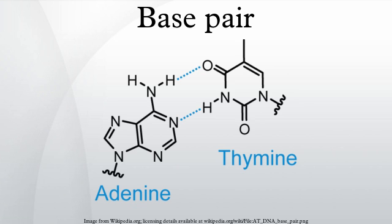Their results show that for PCR and PCR-based applications, the d5SICS–dNaM unnatural base pair is functionally equivalent to a natural base pair, and when combined with the other two natural base pairs used by all organisms — T-A and G-C — they provide a fully functional and expanded six-letter genetic alphabet. In 2014, the same team from the Scripps Research Institute synthesized a circular DNA plasmid containing natural T-A and C-G base pairs along with their best-performing unnatural base pair, and inserted it into E. coli cells that successfully replicated the unnatural base pairs through multiple generations. The transfection did not hamper the growth of the E. coli cells and showed no sign of losing its unnatural base pairs to natural DNA repair mechanisms.